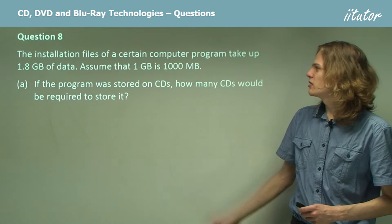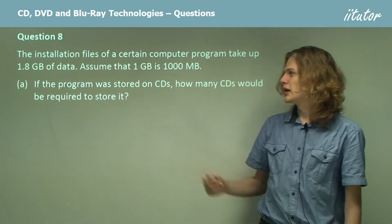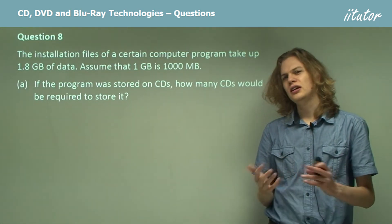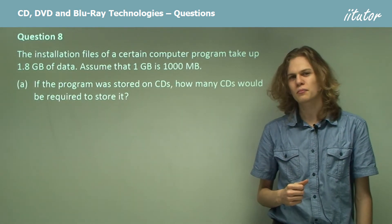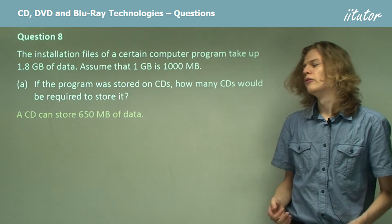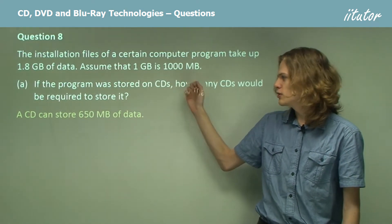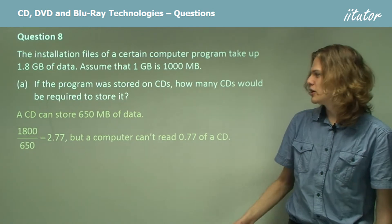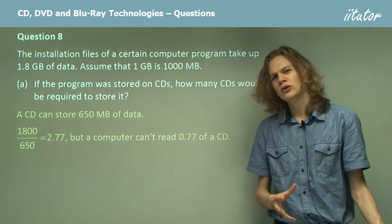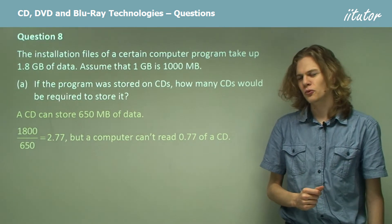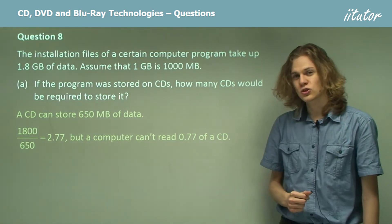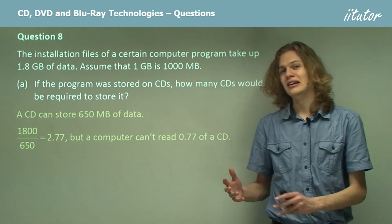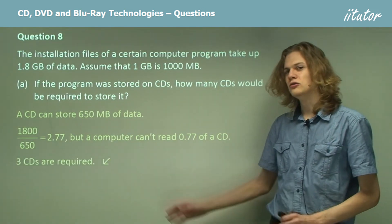Question 8. The installation files of a certain computer program take up 1.8 gigabytes of data. If the program was stored on CDs, how many CDs would we need? A CD stores about 650 megabytes. Converting 1.8 gigabytes gives us 1,800 megabytes. Dividing by 650, we get 2.77 CDs. Since we can't use 0.77 of a CD, we round up and need 3 CDs. The third CD will have some empty space left over.